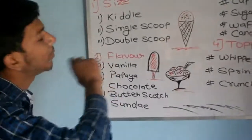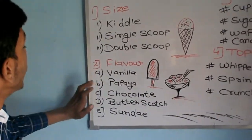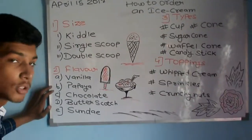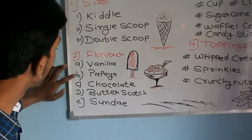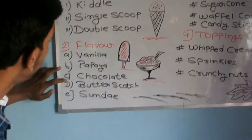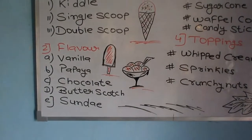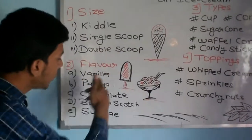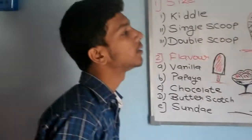Now let's talk about the flavor. There are many flavors in the world, but the most common ones are vanilla, chocolate, butterscotch, sundae, and banana. Strawberry is also one of the most common and popular flavors.